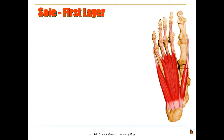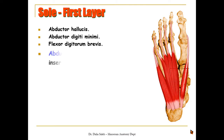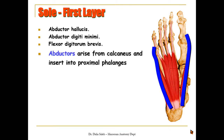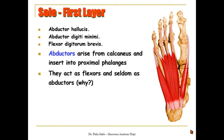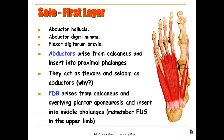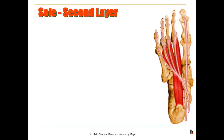The muscles at the sole of the foot are arranged into four layers. The first layer contains the abductor hallucis, the flexor digitorum brevis, and the abductor digiti minimi. The abductors arise from the calcaneus and insert into the proximal phalanges of the big toe or the little toe; they act mainly as flexors. The flexor digitorum brevis arises from the calcaneus and the overlying plantar aponeurosis and inserts into the middle phalanges of the lateral four toes — it is equivalent to the flexor digitorum superficialis in the upper limb.